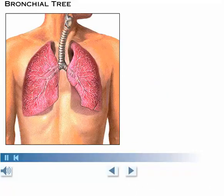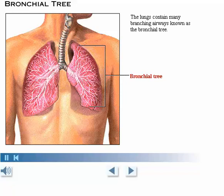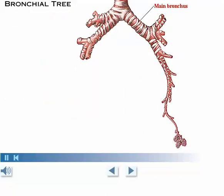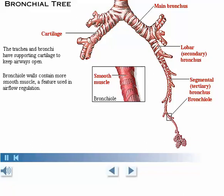Now let's continue to follow the air flow as it enters the lungs. The lungs contain many branching airways which collectively are known as the bronchial tree. Air enters the lungs through the main bronchi, which branch into lobar bronchi, which in turn branch into segmental bronchi. The trachea and all the bronchi have supporting cartilage which keeps the airways open. Air flows deeper into the lungs as the segmental bronchi branch repeatedly into smaller bronchi, which eventually branch into bronchioles. Bronchioles lack cartilage and contain more smooth muscle in their walls than the bronchi, allowing air flow regulation by altering their diameter.